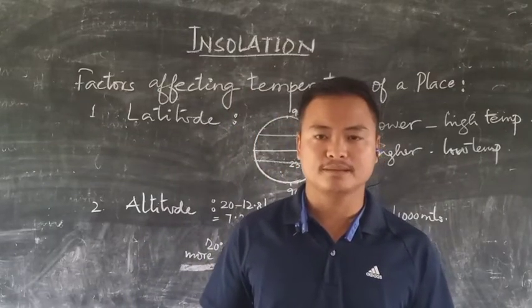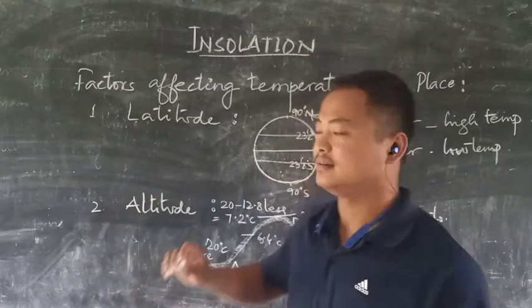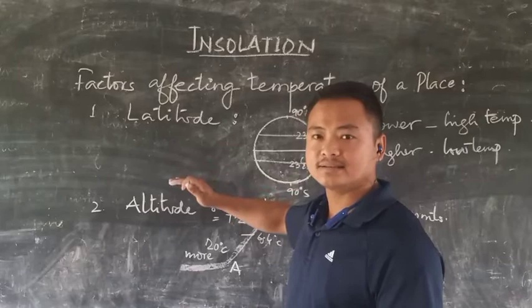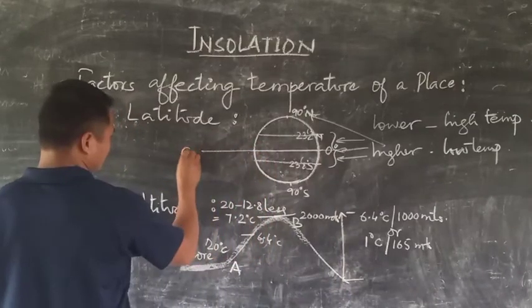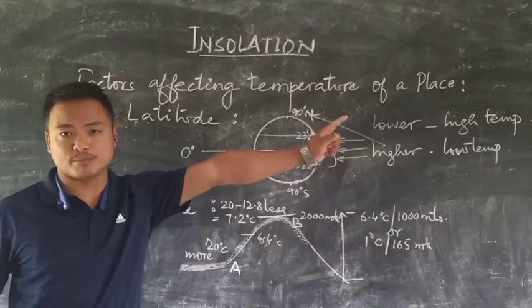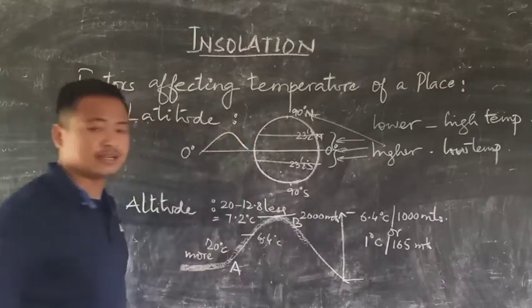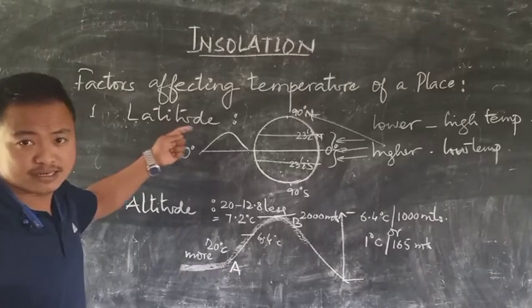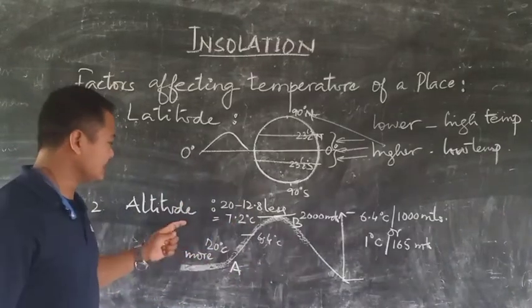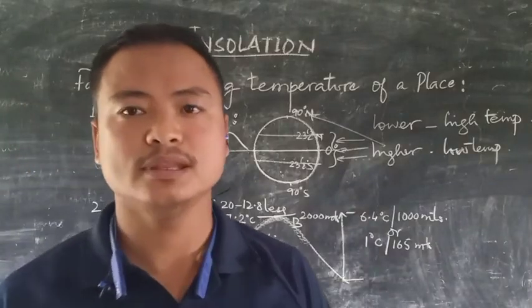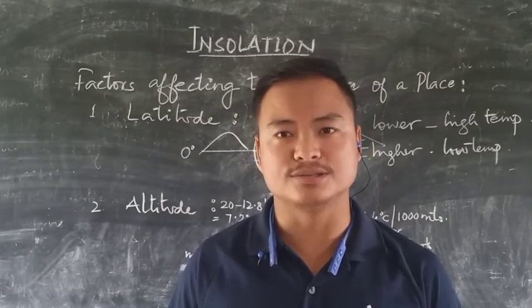It is important to note that not just one factor tends to affect the temperature of a place. For example, an equatorial region at 0 degrees latitude will have high temperature due to the latitude factor. However, if there is also significant altitude, then despite being at lower latitudes, the temperature may decrease because of the altitudinal factor. That is why it is very important to understand all the factors together.